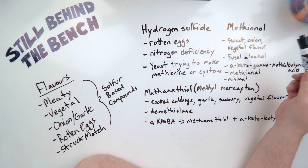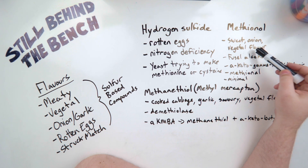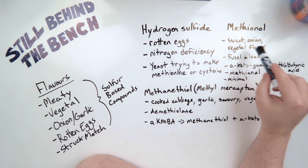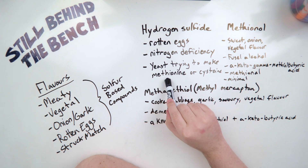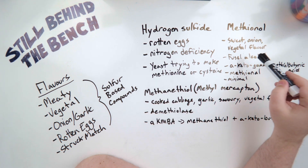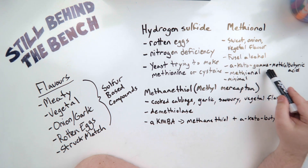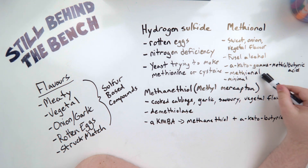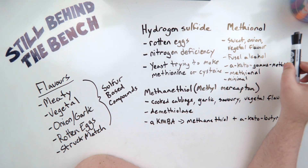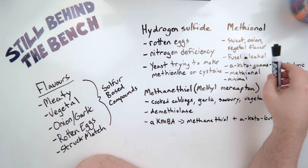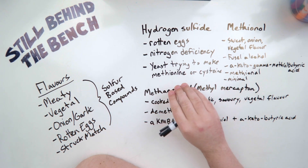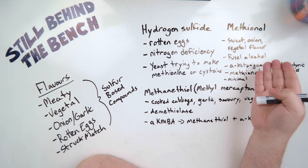The next compound is methionol — it's a sulfurous alcohol with a sweet onion, vegetal flavor. It's produced in the same way as most fusel alcohols, as I covered in my previous video on fusel alcohols. The only difference is that methionol starts from methionine instead of those other amino acids. It gets transaminated into an alpha-keto acid called alpha-keto-gamma-methylbutyric acid — that's a mouthful. Then it gets decarboxylated into an aldehyde, then reduced into the alcohol methionol. Controlling its production is similar to all other fusel alcohols: you want healthy, well-fed yeast with the right nutrients, but not too much, and you'll limit the production of this compound.